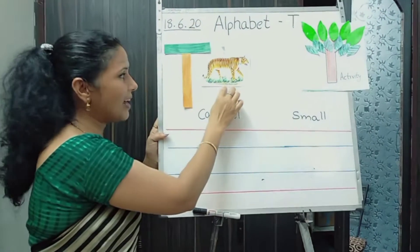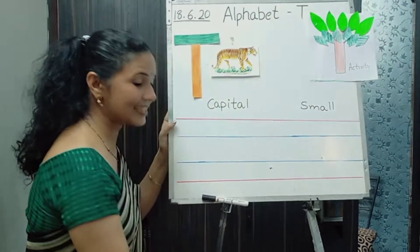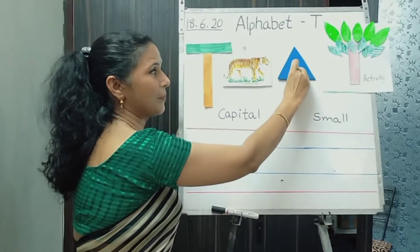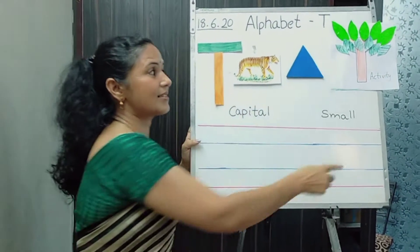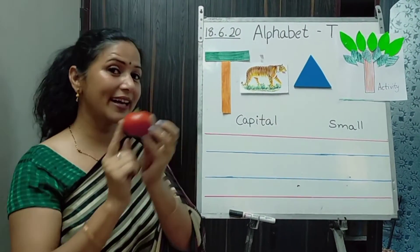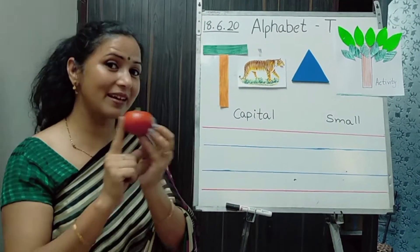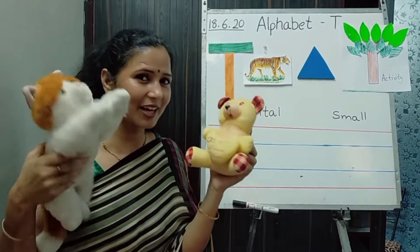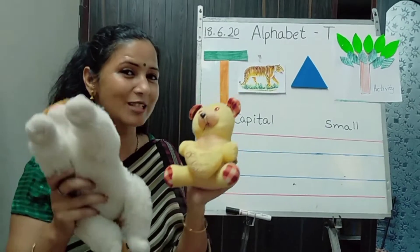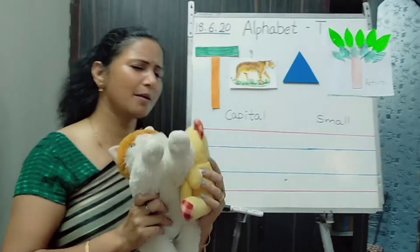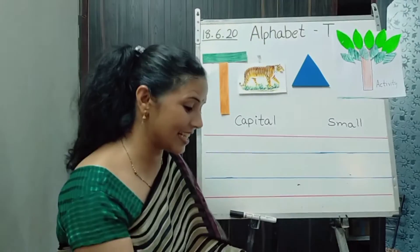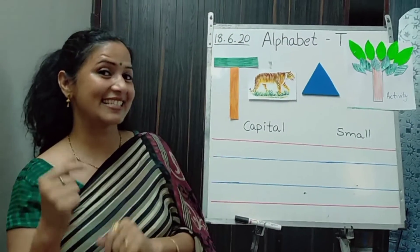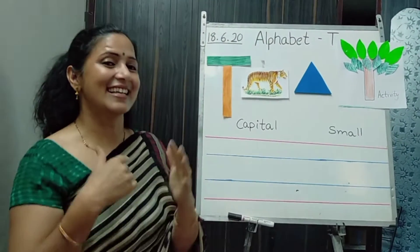Ta-ta-ta — Triangle. Triangle is a shape name. Ta-ta-ta — Tree. Ta-ta-ta — Tomato. Tomato is a vegetable. Ta-ta-ta — Toys. There are toys in everyone's house and everyone's toys are very nice, and I also like toys. Ta-ta-ta — Teacher.